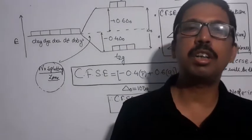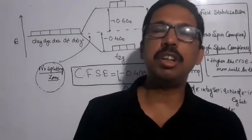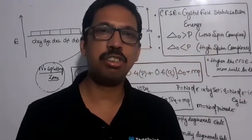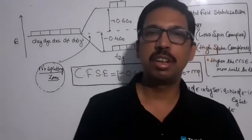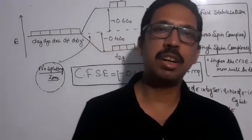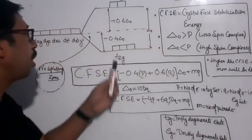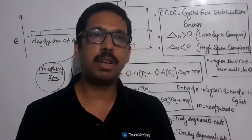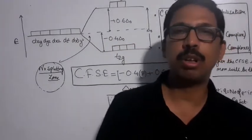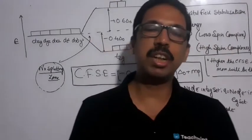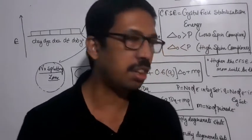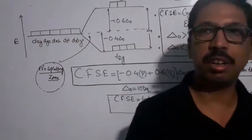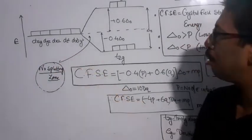The T2G set includes the dxy, dyz, and dxz orbitals, which point away from the ligand direction, so their energy decreases by minus 0.4 delta-o. The EG set includes the dz-squared and dx-squared-minus-y-squared orbitals, which point toward the ligand direction, so their energy increases by plus 0.6 delta-o.